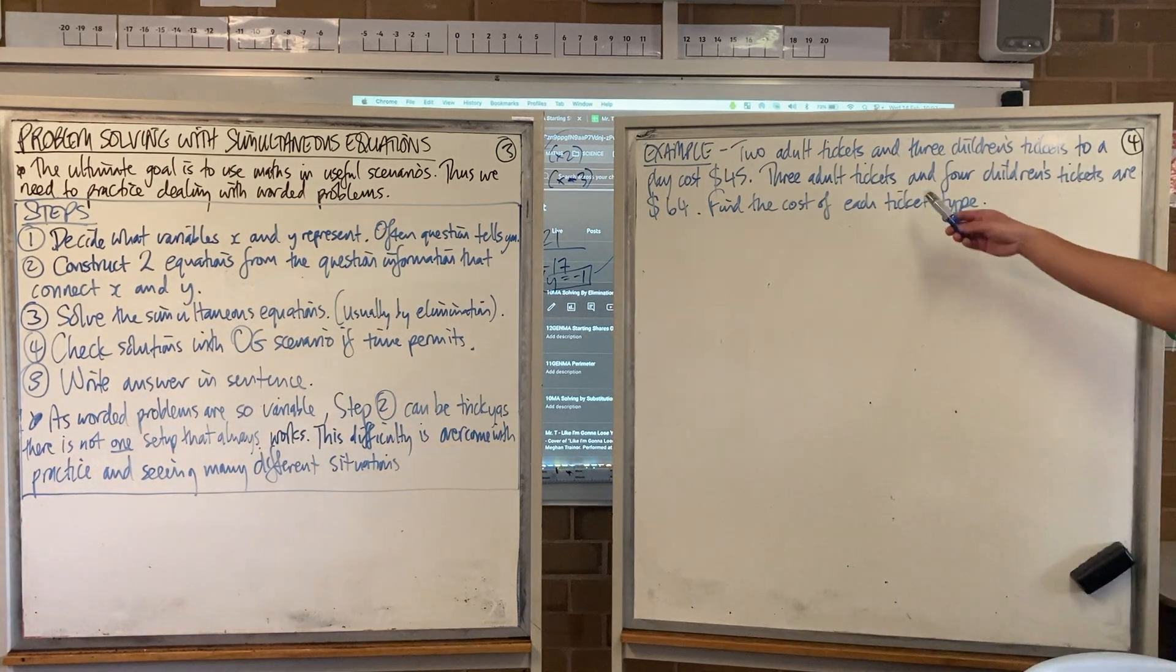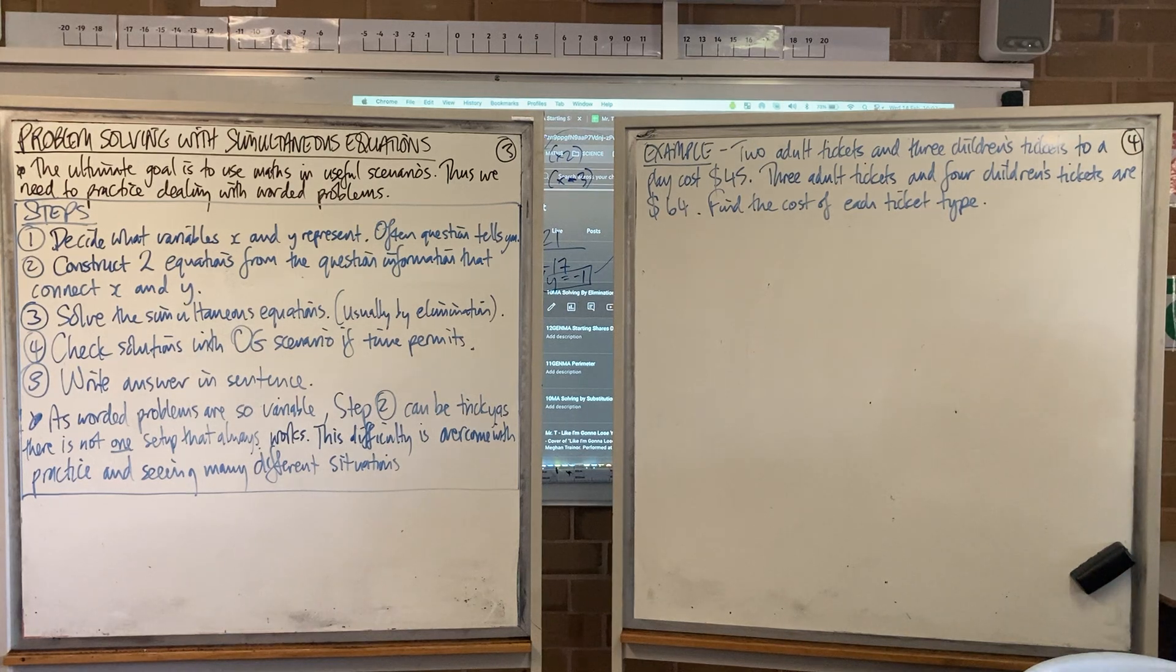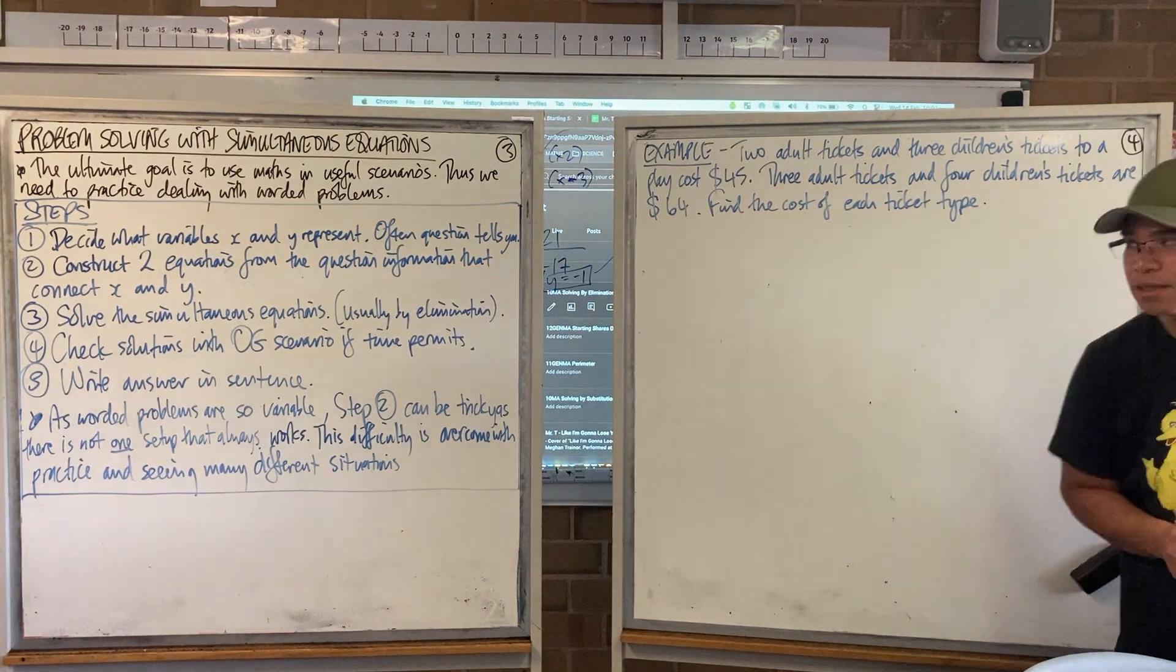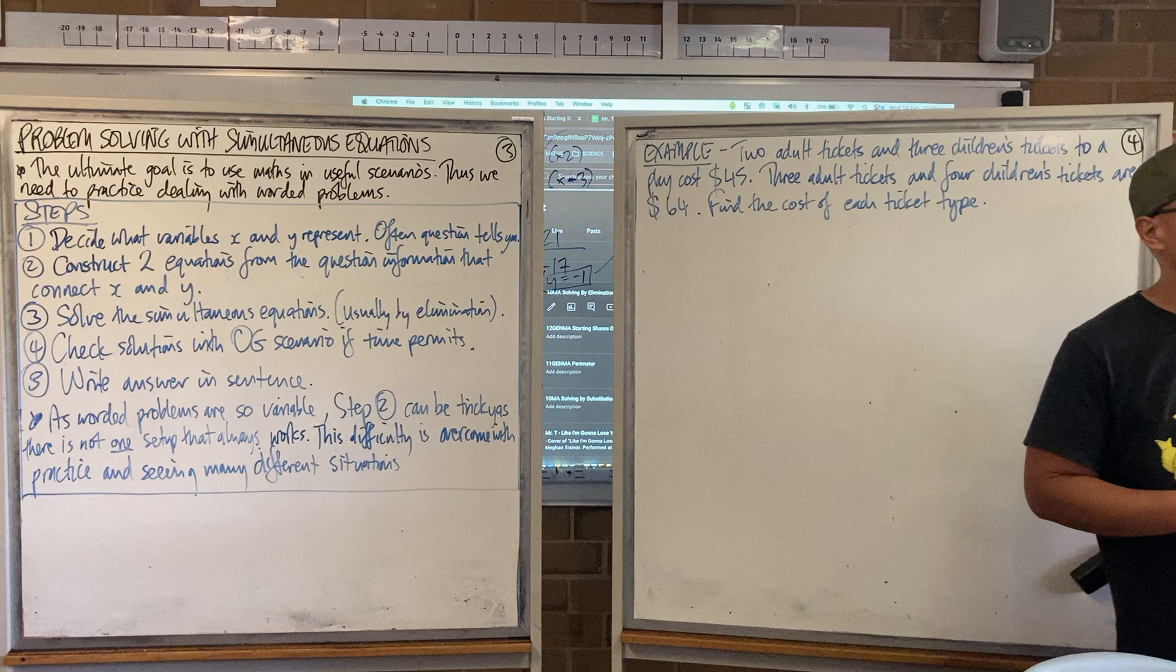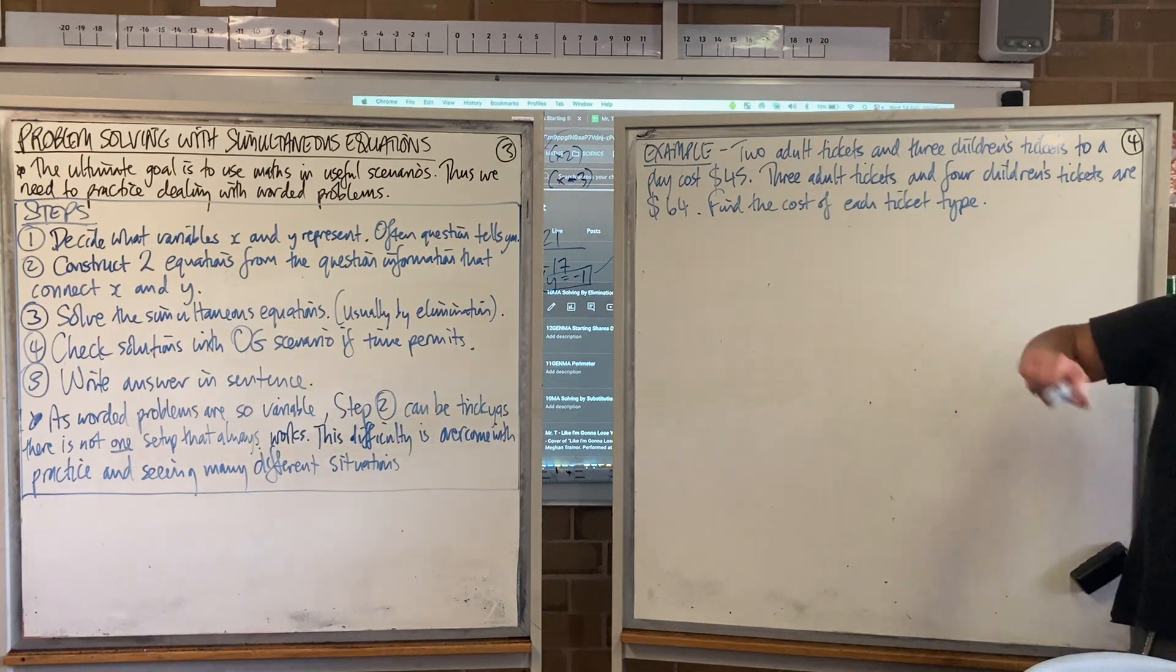So the scenario that we have today is: two adult tickets and three children's tickets to a play cost 45 dollars. Three adult tickets and four children's tickets are 64 dollars. What is the cost of each ticket type? So, let's apply those steps.